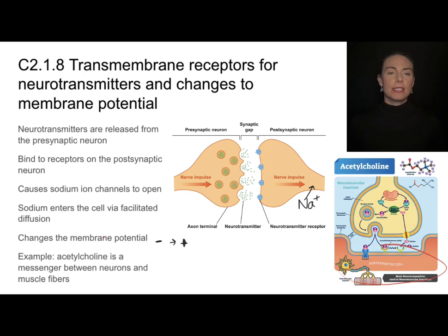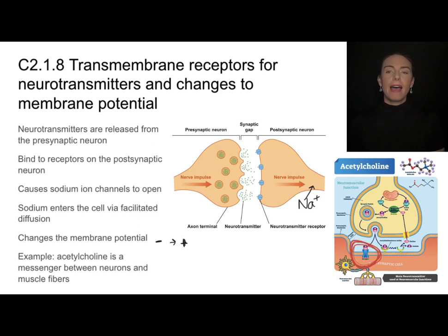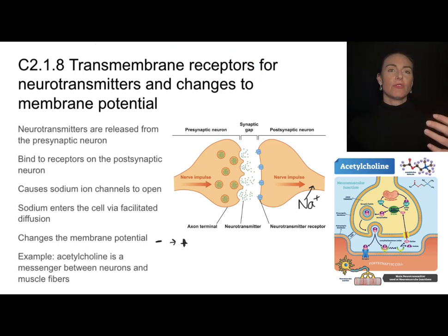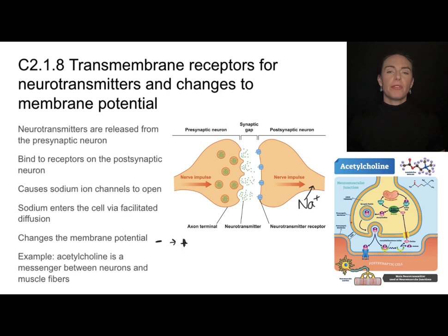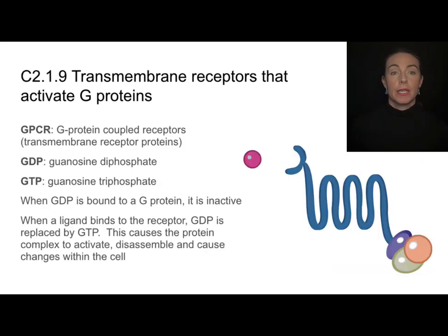Acetylcholine is a neurotransmitter that acts as a messenger molecule between neurons and motor units of muscles, passing signals to muscle fibers. When a ligand like a neurotransmitter binds to a transmembrane receptor, it kicks off a series of other things—those secondary messenger molecules do other things in the cell, whether that's opening sodium ion channels or causing whatever it is that muscles do. So transmembrane receptors are for ligands that cannot enter the cell; they rely on other things to transmit that message.